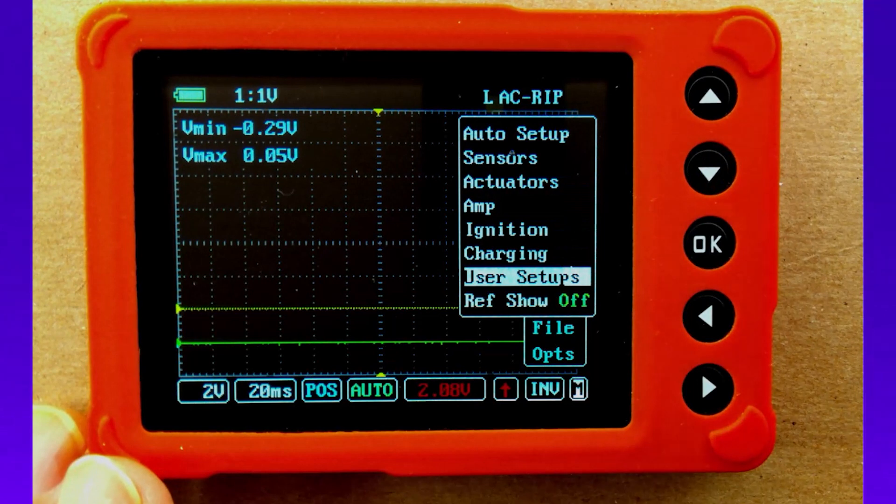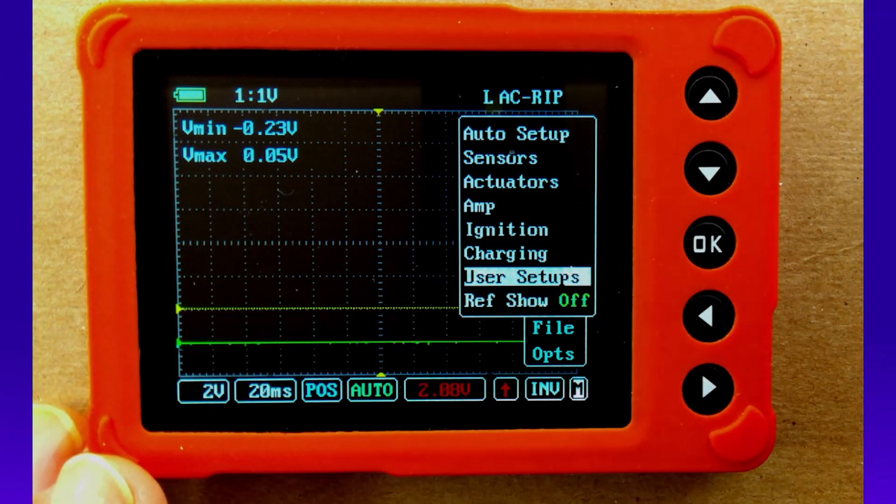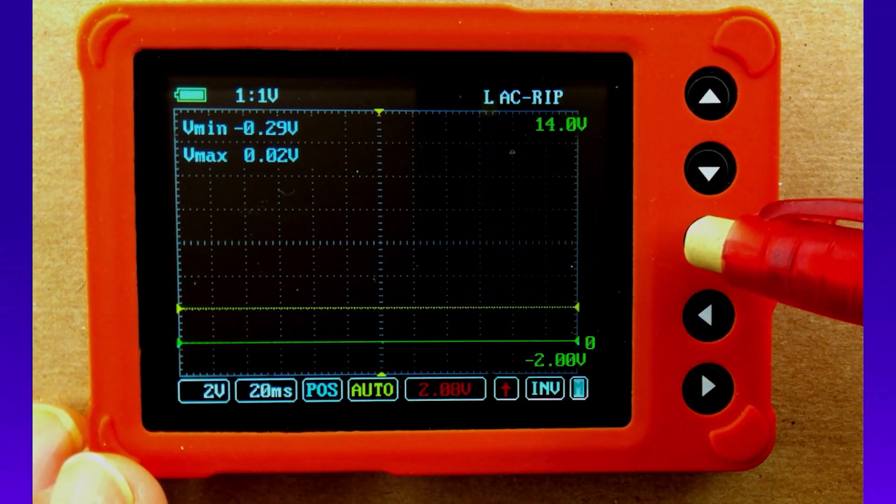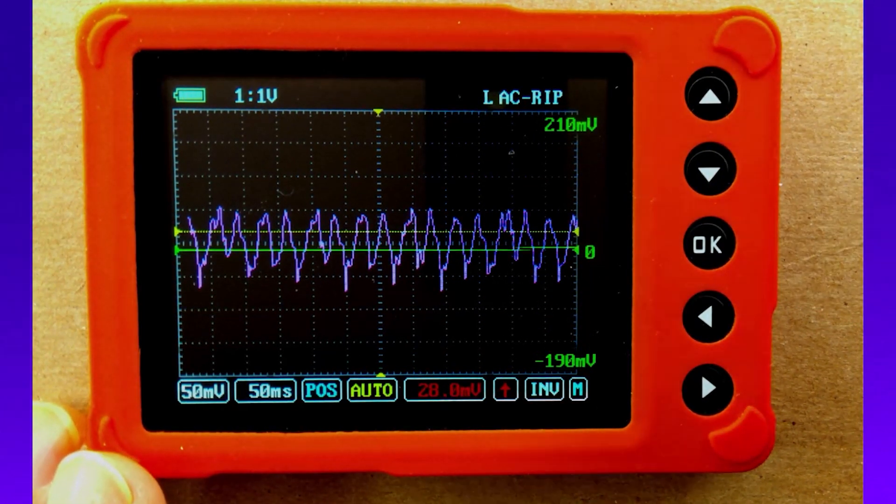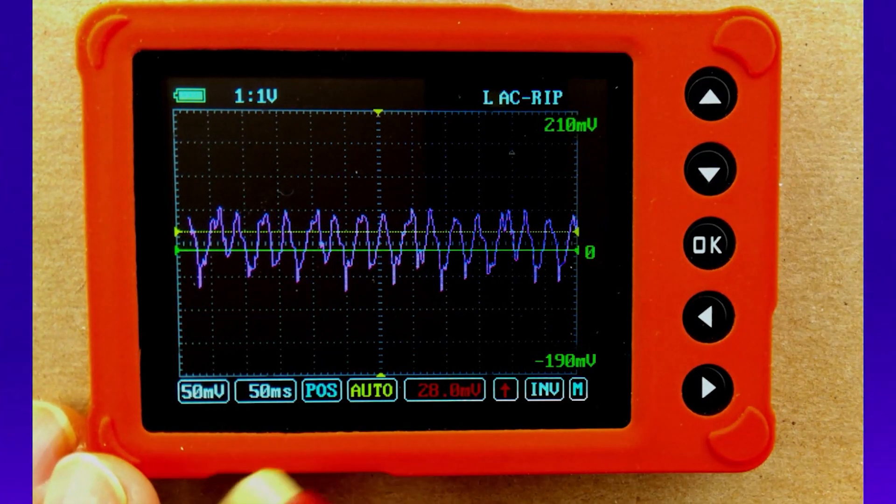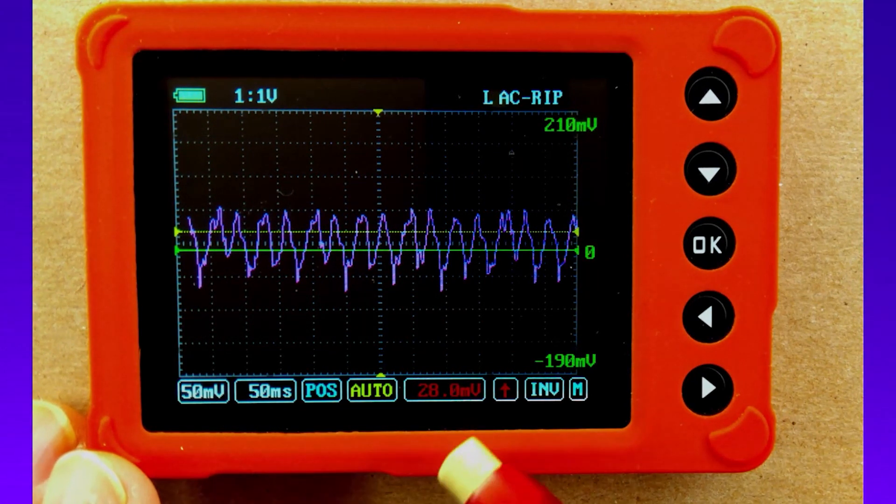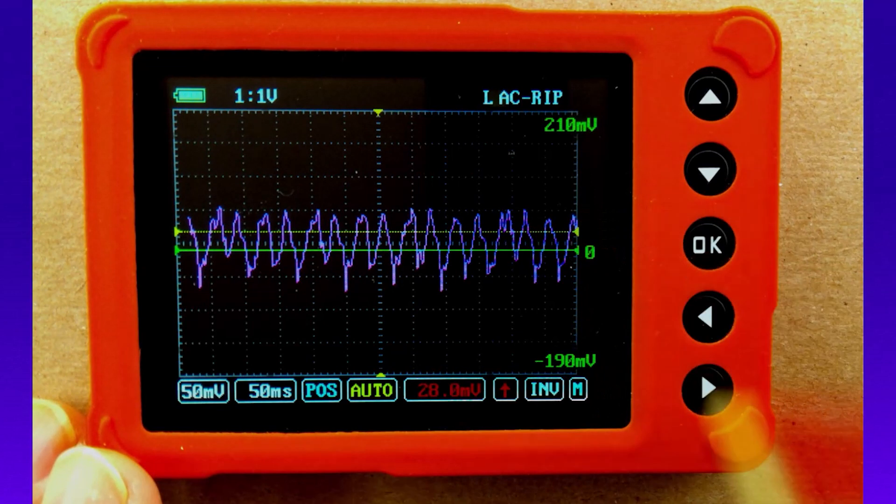And you'll notice the first one that did come up was my AC ripple. So go ahead and press and hold the OK button until it turns completely green. And you'll see that we're at 50 millivolts, 50 milliseconds, we're at 28 millivolts on my trigger, and we have loaded our reference file already.